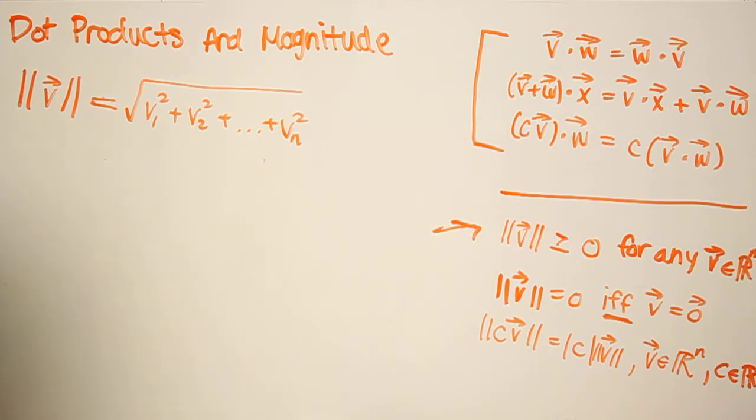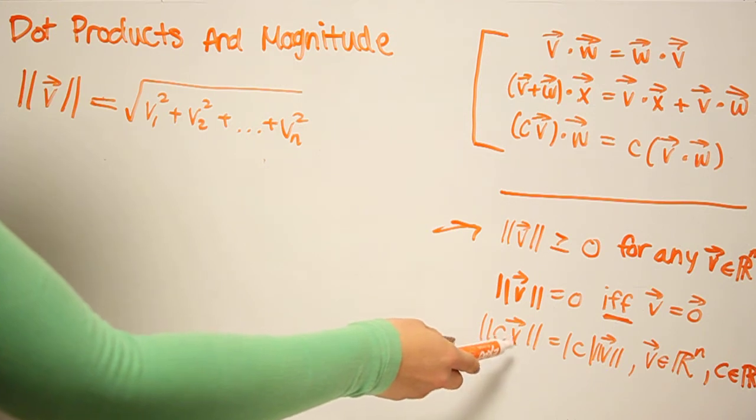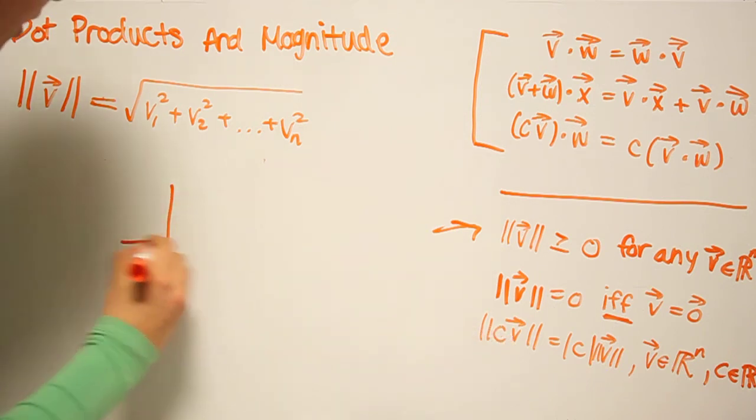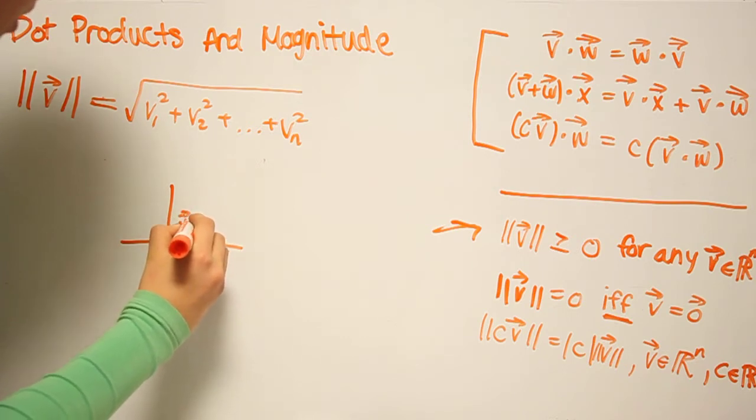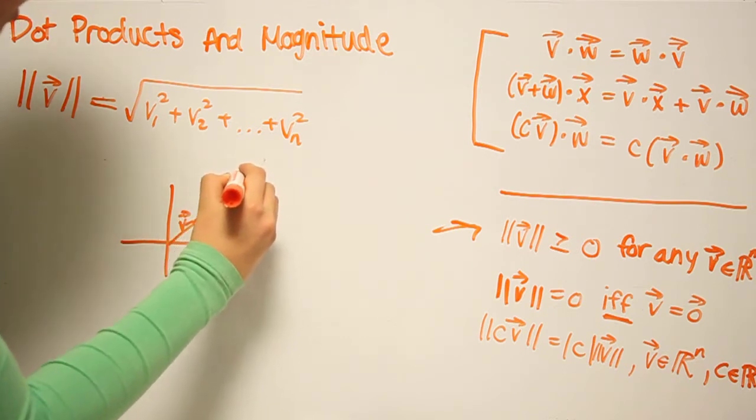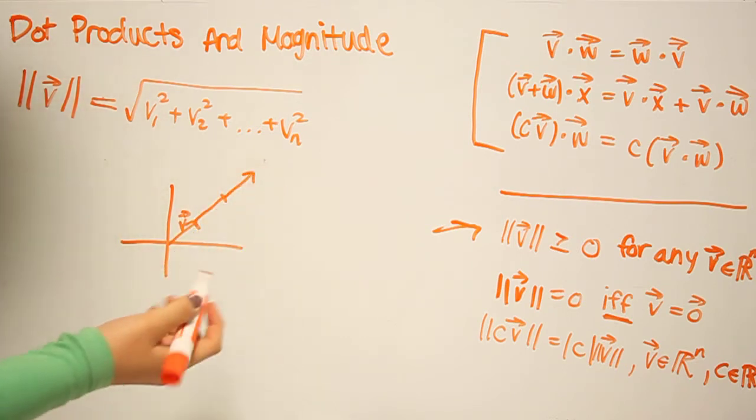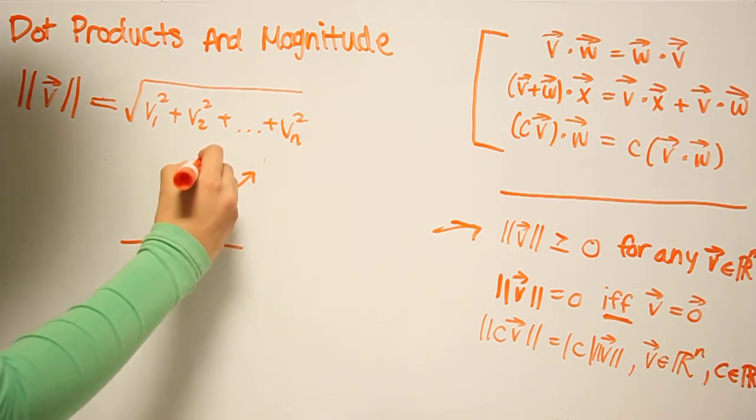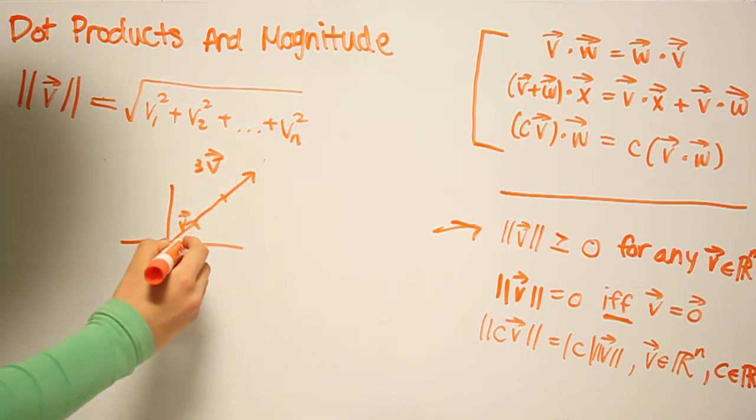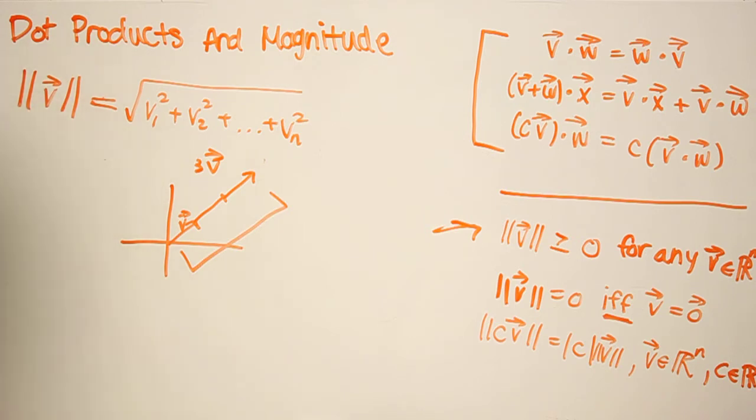And finally, we have magnitude of a vector V. If we increase that by scalar multiple, let's say our C is three in this case, so this is three V. Then the magnitude also increases by the absolute value of C.